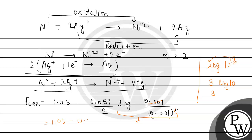So this value will be: 1.05 minus 0.059 divided by 2 multiplied by 3. So we have 1.05 minus 0.059 times 3 divided by 2. It comes out to be 0.0885. So subtract, we will get the value 0.9615 volt.